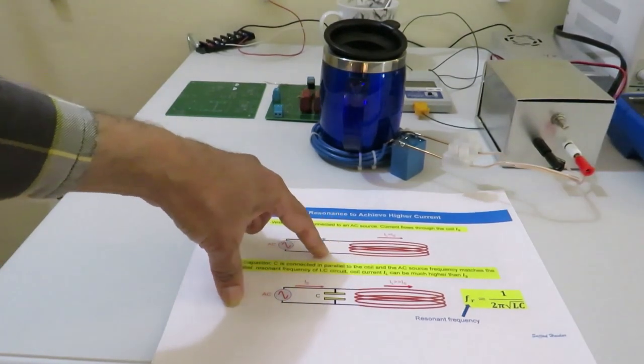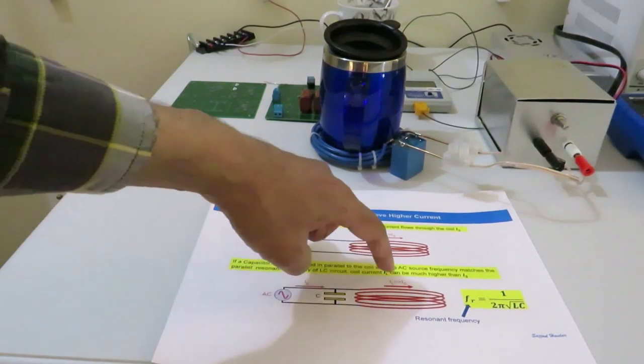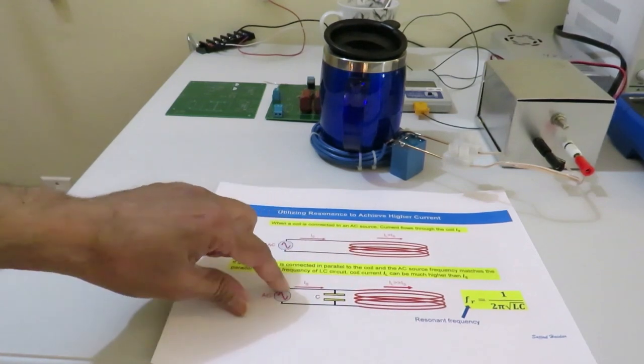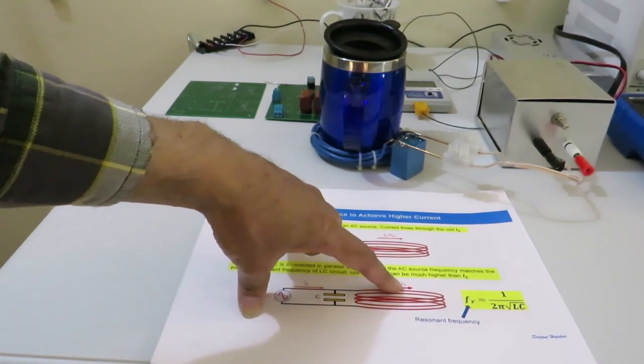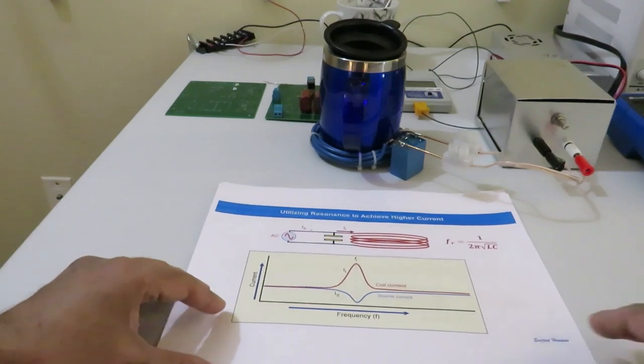To get higher current through the coil, we are using a technique called resonance. A capacitor is connected in parallel with the coil. And as a result, though the current flowing through the source is not much, but the coil itself is getting very high current because of the resonance.